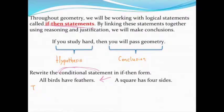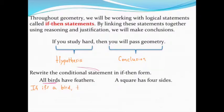First, let's take statements and write them in if-then form as a conditional statement. Take the sentence 'all birds have feathers.' You may have to add a word or two to make it make sense, but always start with 'if' and have 'then' in the middle — don't add too many words or change the meaning. Keep things in the same order. I worded this as: 'if it's a bird, then it has feathers.'